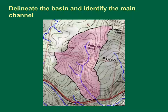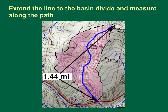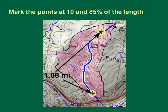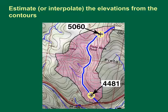The first step in the process is to delineate the basin and identify the main channel. This image shows the contributing area from a small tributary to the Verde River at Pinto Mesa in New Mexico, where it crosses Interstate 17. Measure the main channel length along the path of the channel from the basin outlet above the highway to the basin divide on Juniper Hill. In this case, the distance along the stream between these points is 1.44 miles. Identify the points that are at locations along the stream at 10% and 85% of the main channel length. Measure the distance along the main channel path; in this case, the distance between these points is 1.08 miles. Next, estimate or interpolate the elevations at each point from the topographic contours on the map. In this case, the 85% point is at about 5,060 feet and the 10% point is at about 4,481 feet.